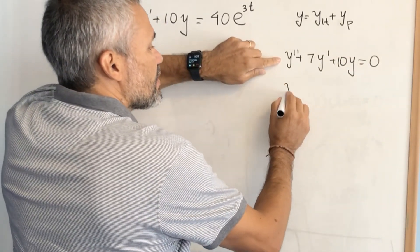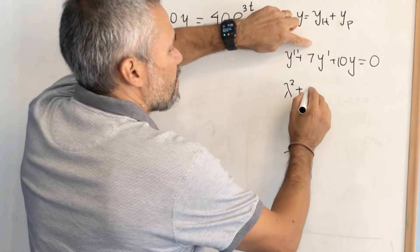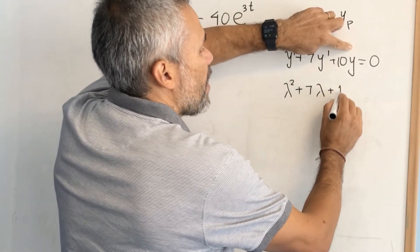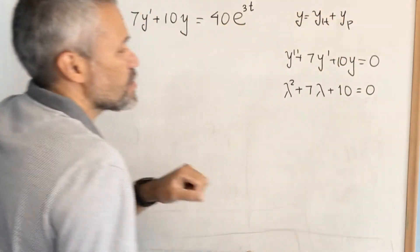we replace the second derivative by lambda squared, we replace the first derivative by lambda, and we replace y by 1, and we create a quadratic equation.